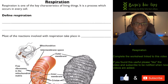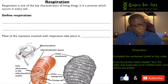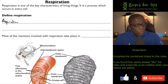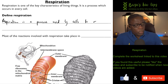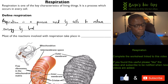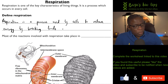Here's the worksheet — as usual you should be filling this in as you watch the video. Let's put down a definition for respiration. Respiration is a process used by cells to release energy by breaking bonds in molecules.